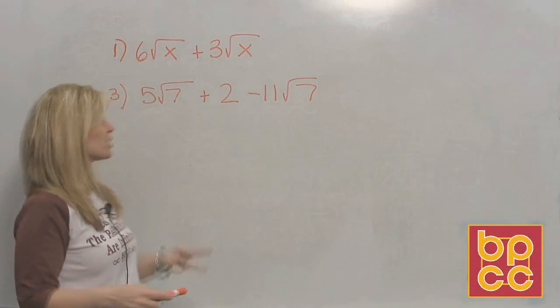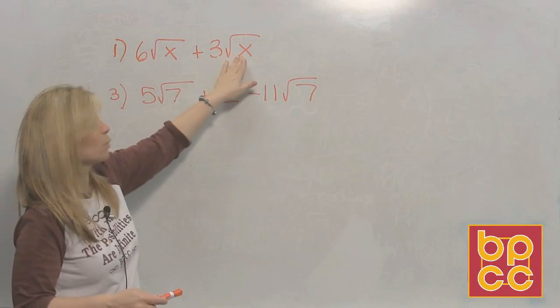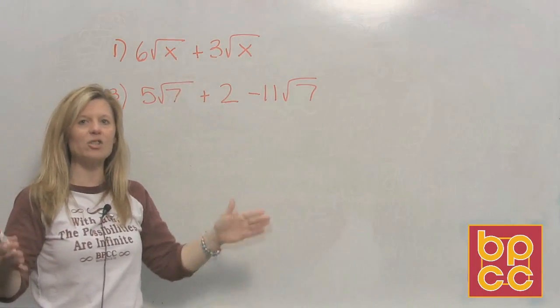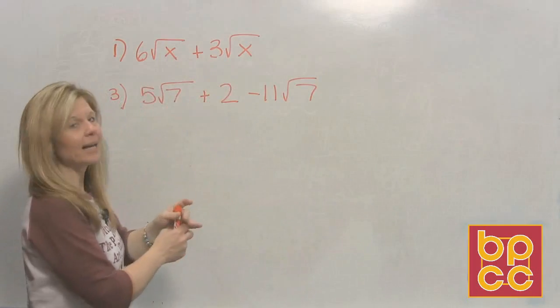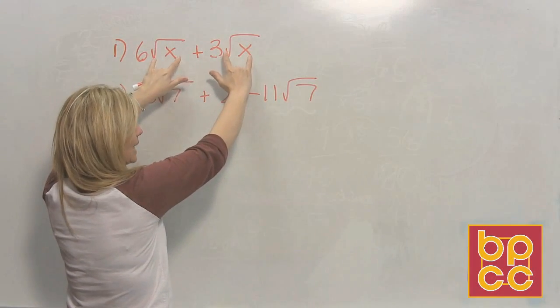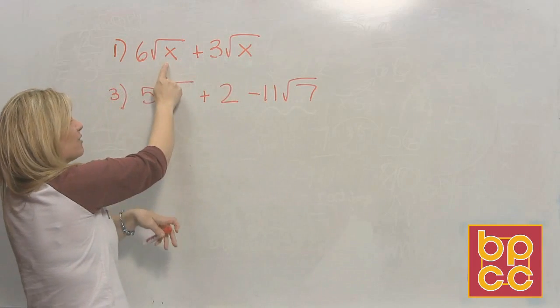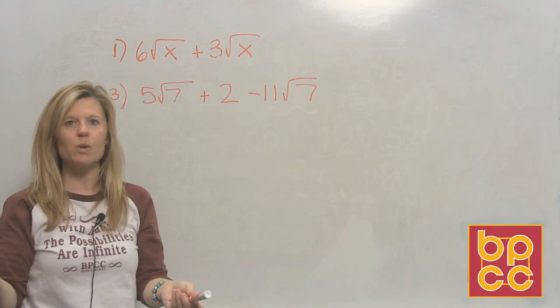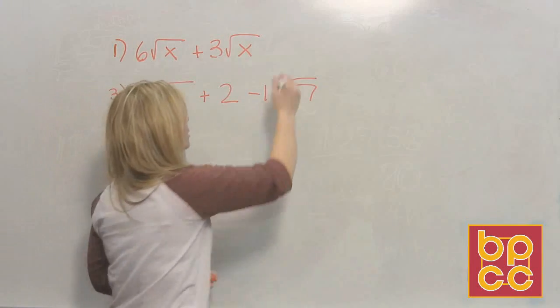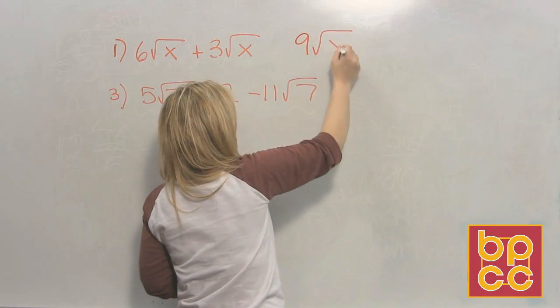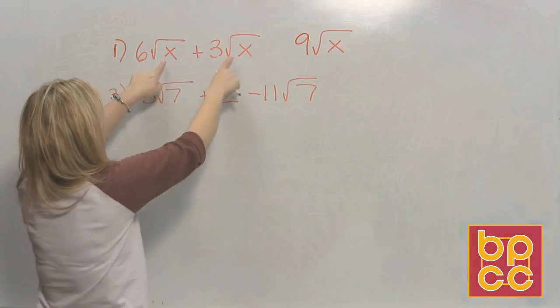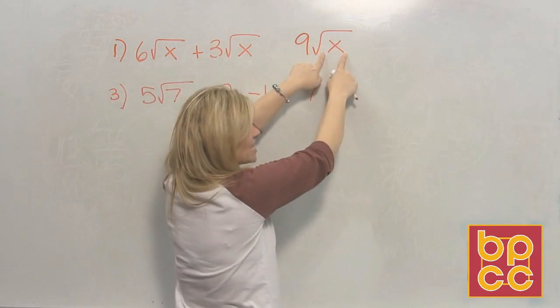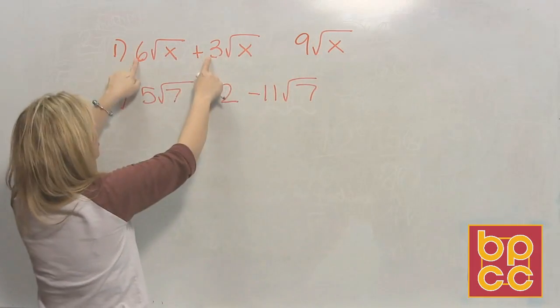Okay, my first example says 6 square roots of x plus 3 square roots of x. Again, I'm asking you to add, so you must have like terms. What makes these alike is the radicand. What's under here should be exactly alike. It is. So if I have 6 of these square roots of x's and you have 3 of these square roots of x's, how many do we have? We have 9. We have 9 what? Square root of x. The rule is to add, you must have like terms. The radicands must be alike. What's alike stays the same. What you're adding are the coefficients.